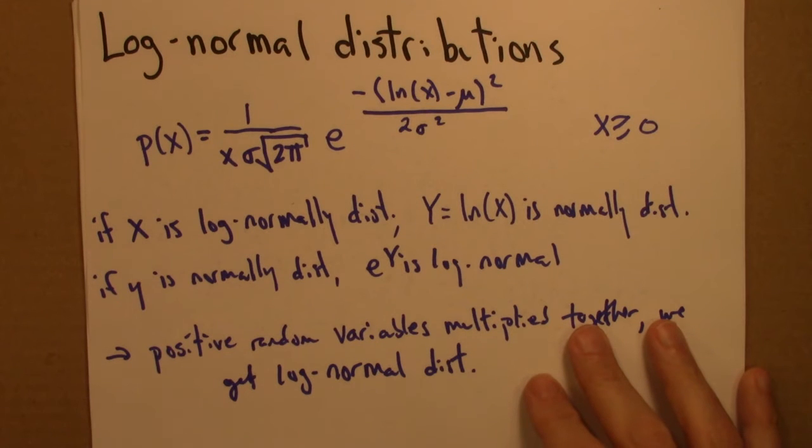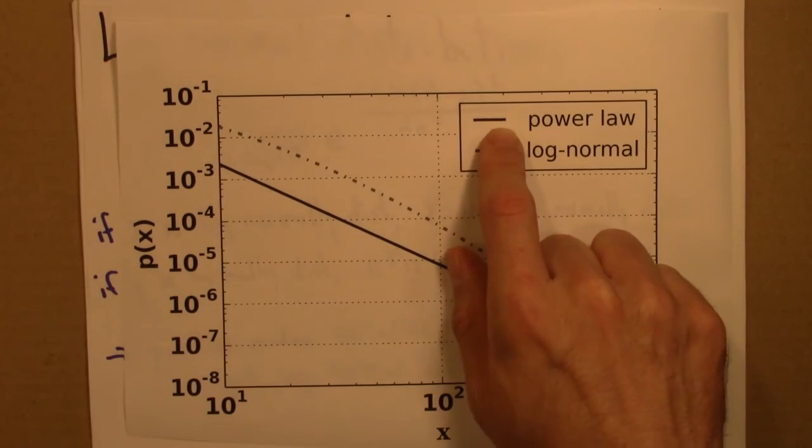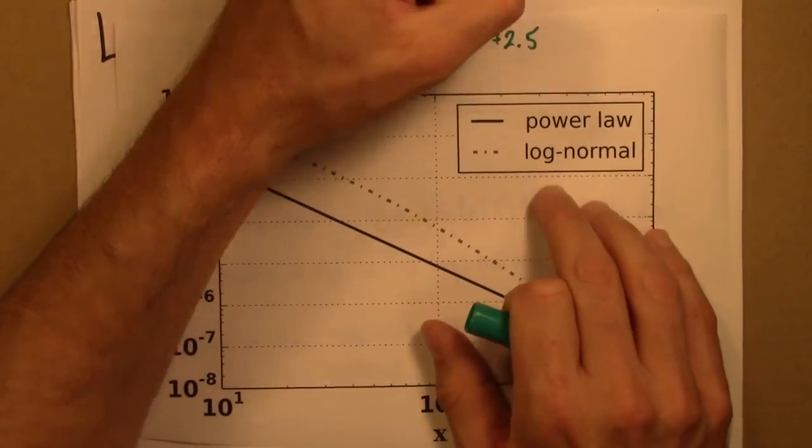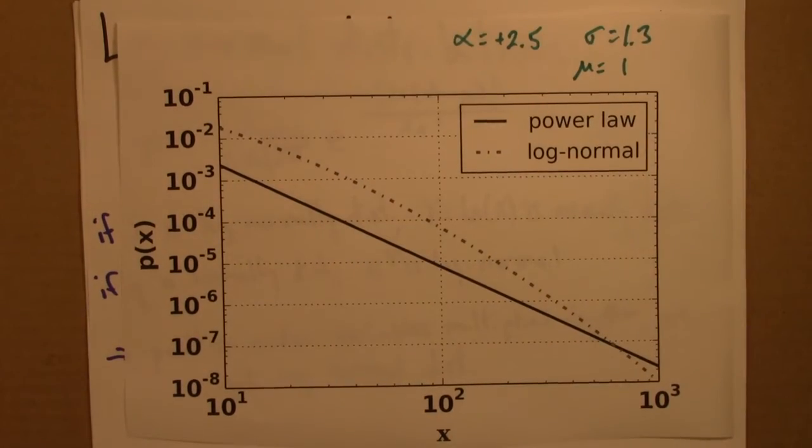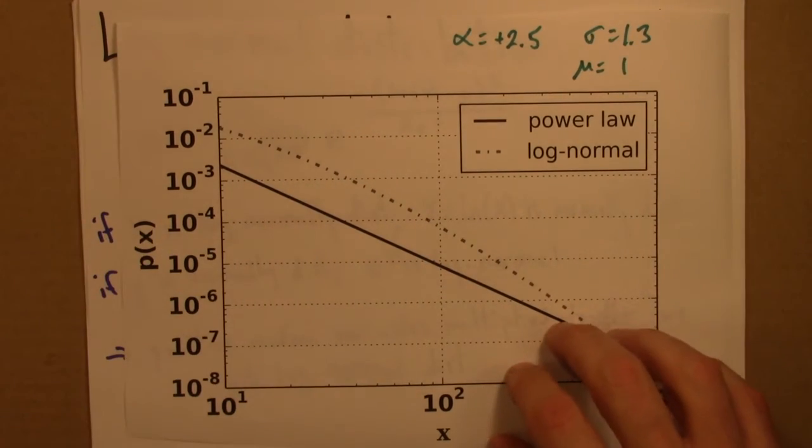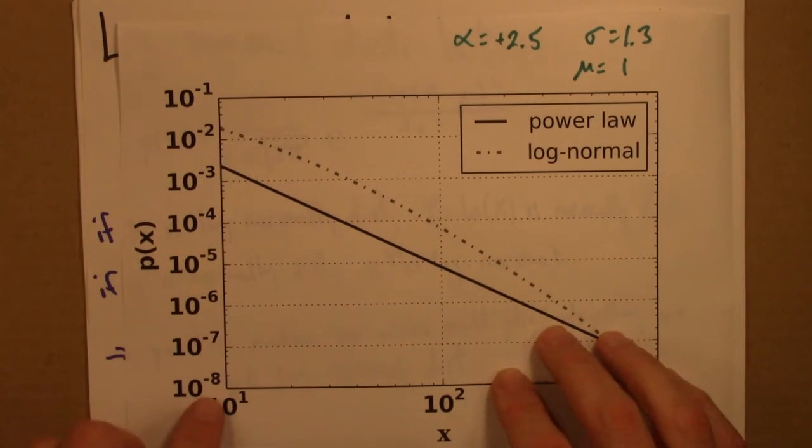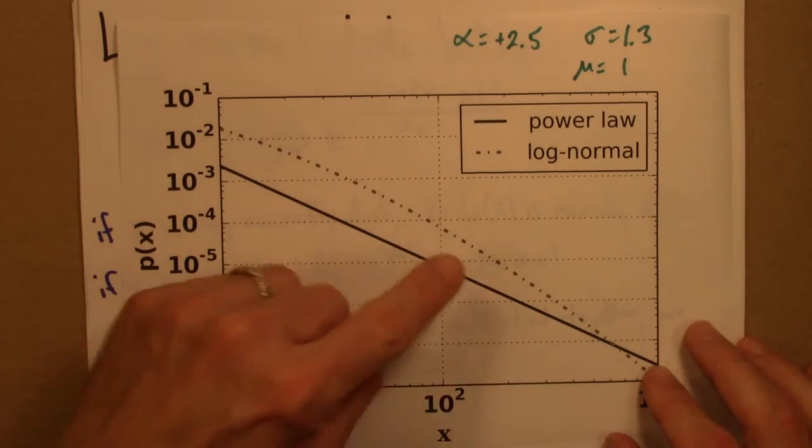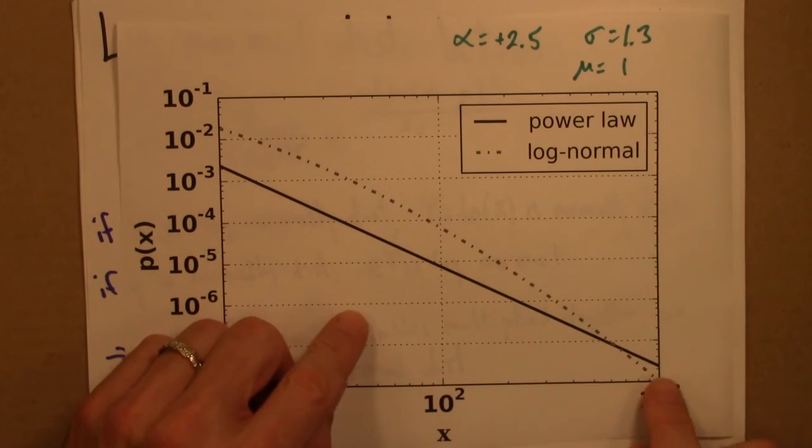So it turns out that log-normal distributions and power laws can look very similar. So here's one illustration of that. I took a power law, let's see, I think I did alpha mine is 2.5. And for the log-normal, I had a sigma of 1.3 and a mu of 1. But it's not hard to kind of get plots of this general shape. So this is a plot of two different distribution functions, the power law, which we've been working with, and the log-normal. And this is on a log-log scale. So as we're seeing again and again, the power law is a nice straight line. The log-normal is not a perfectly straight line, but it's not that curved either.